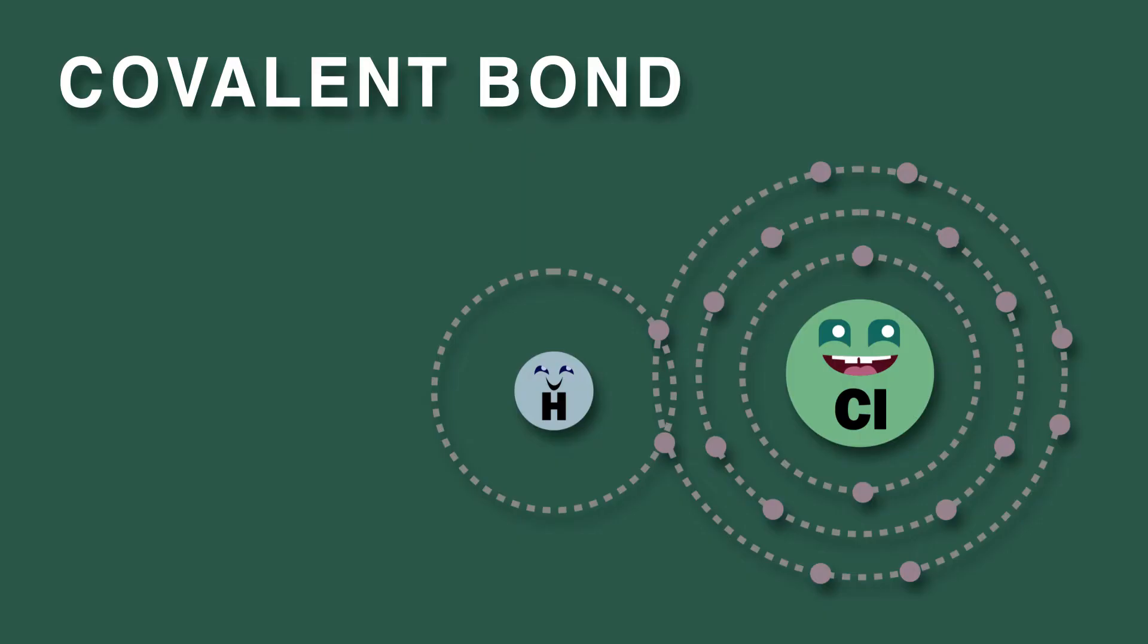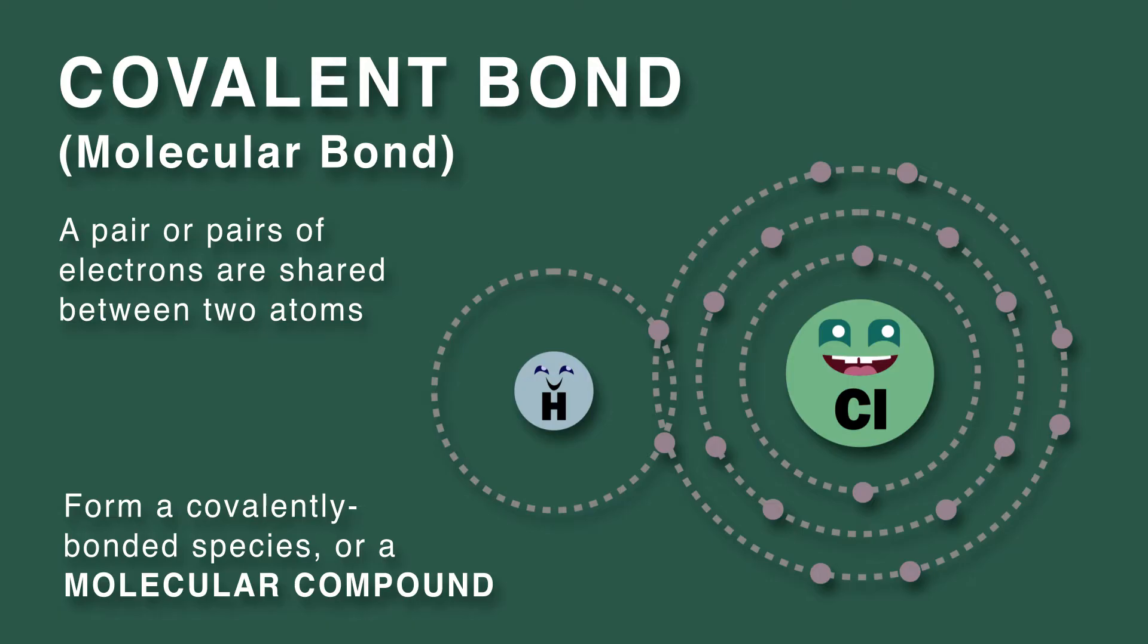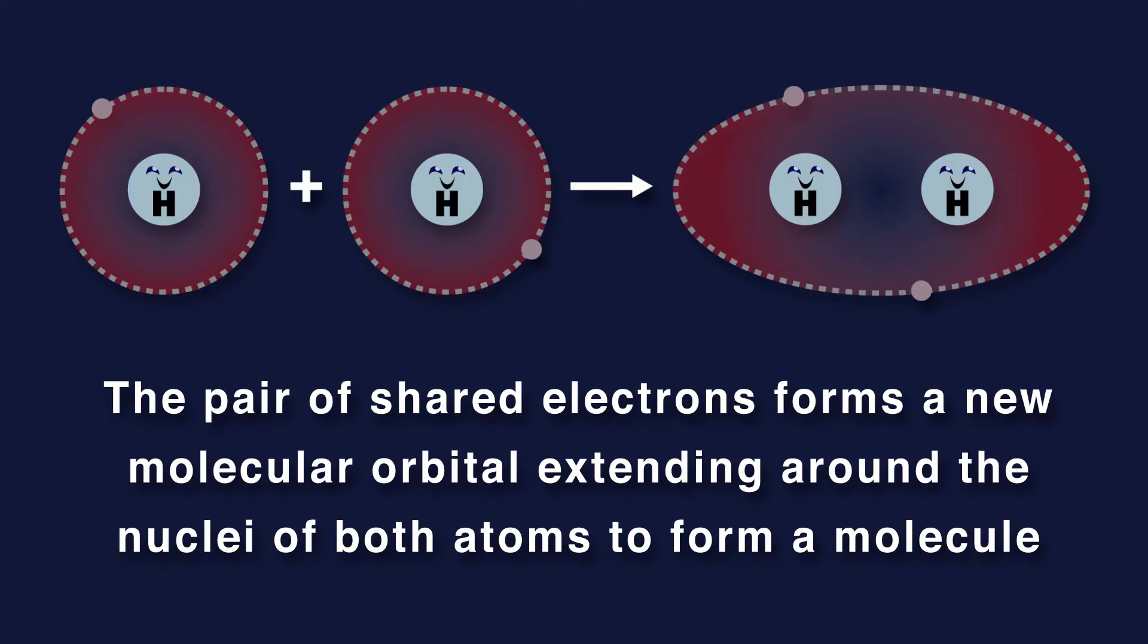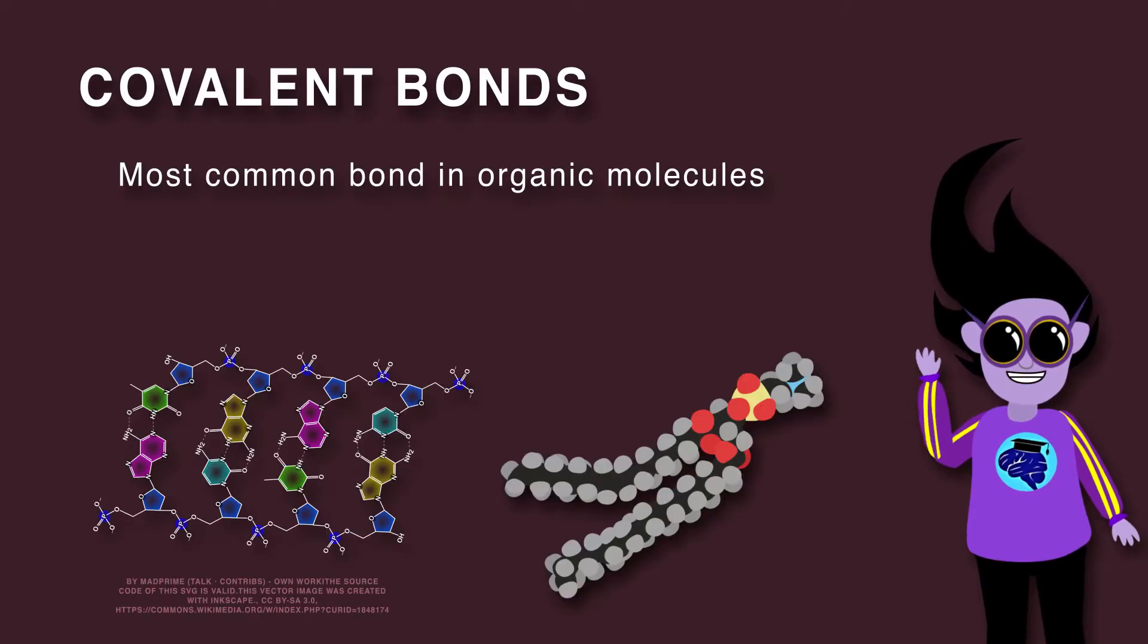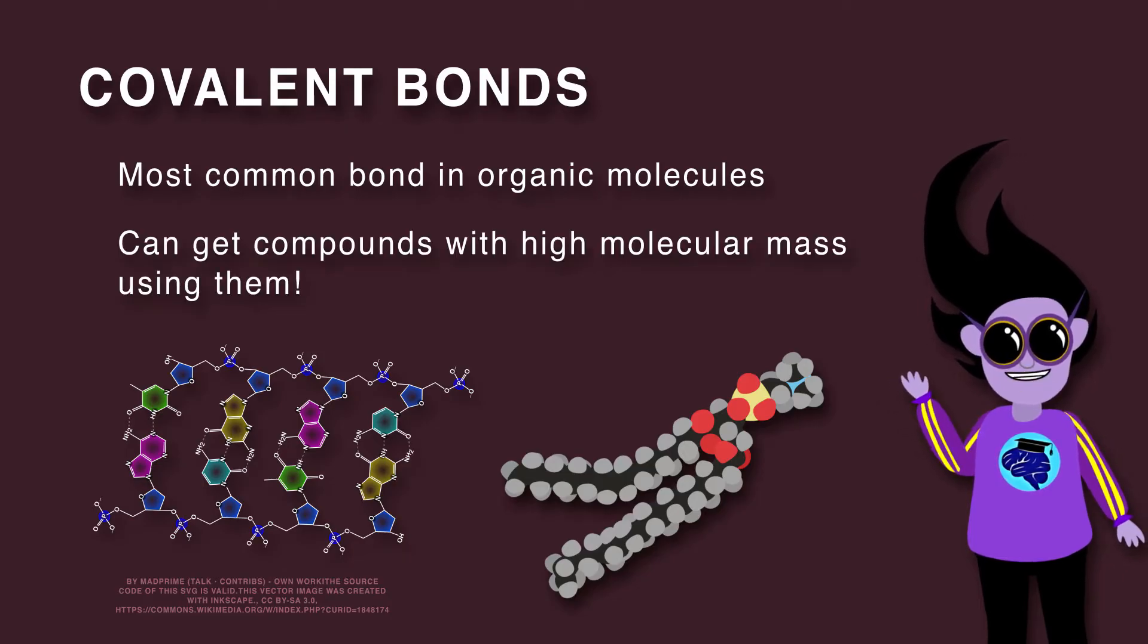A covalent bond, also known as a molecular bond, is formed when a pair or pairs of electrons are shared between two atoms to form a covalently bonded species, or a molecular compound. As a result, the pair of shared electrons forms a new molecular orbital extending around the nuclei of both atoms to form a molecule. Covalent bonds are the most common bond in organic molecules, and you can get compounds with high molecular mass in this way.